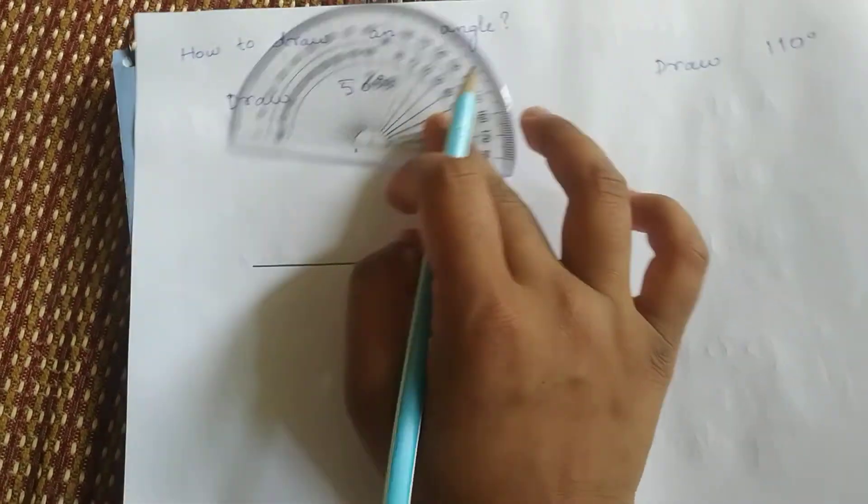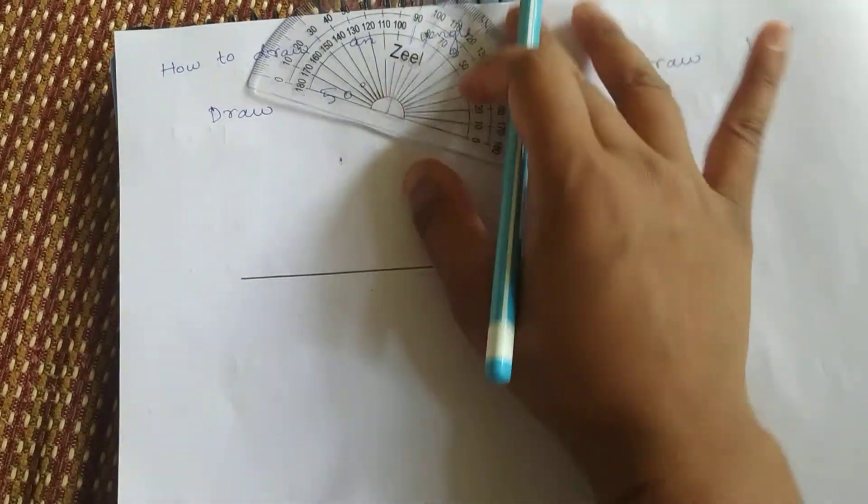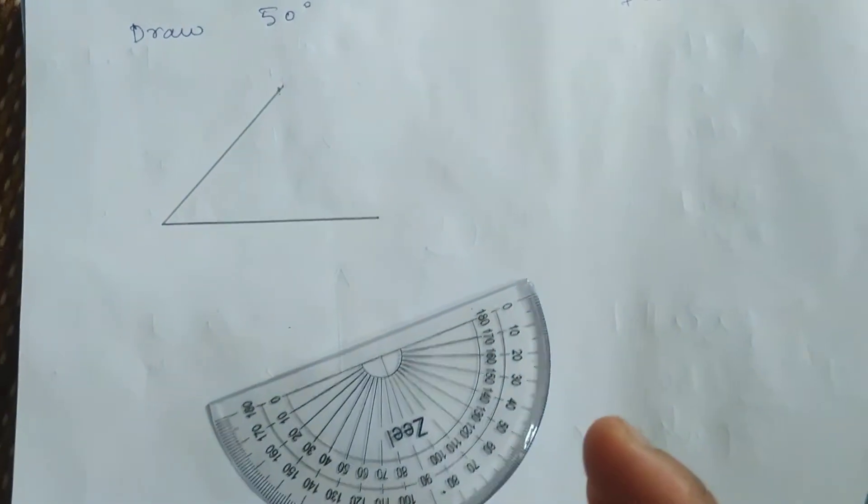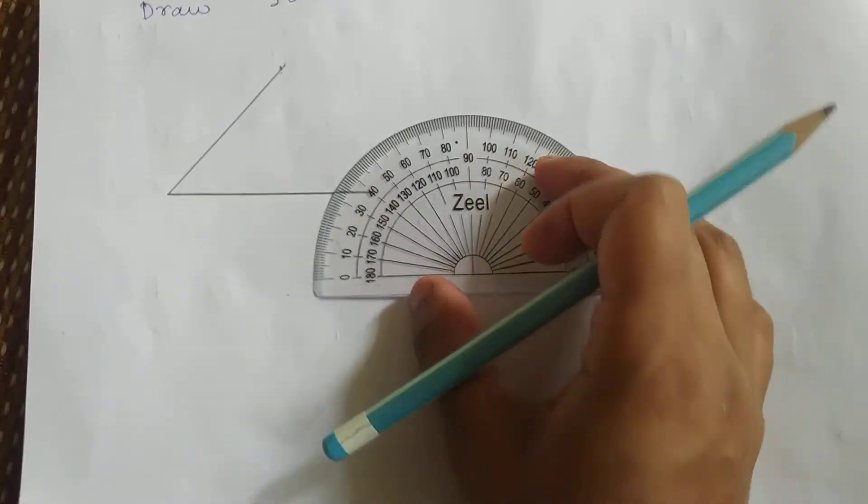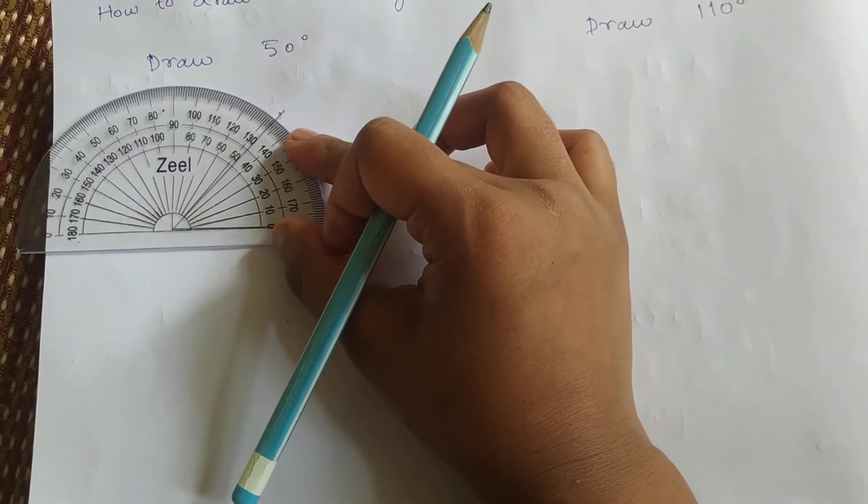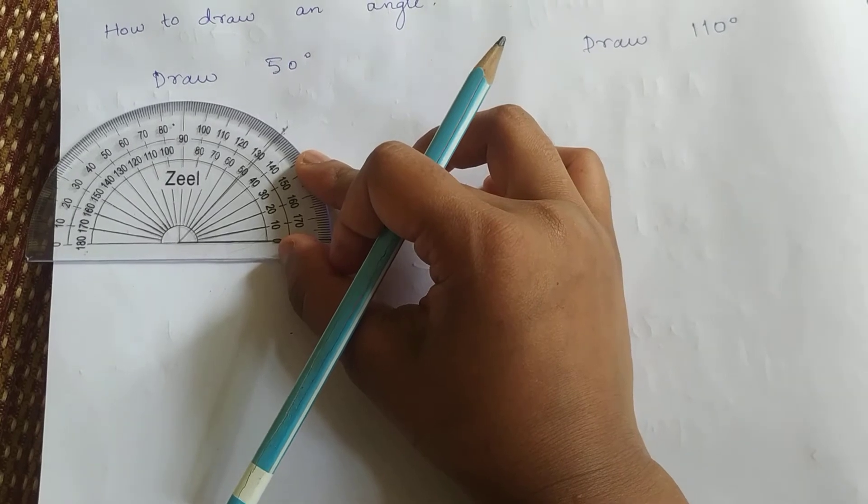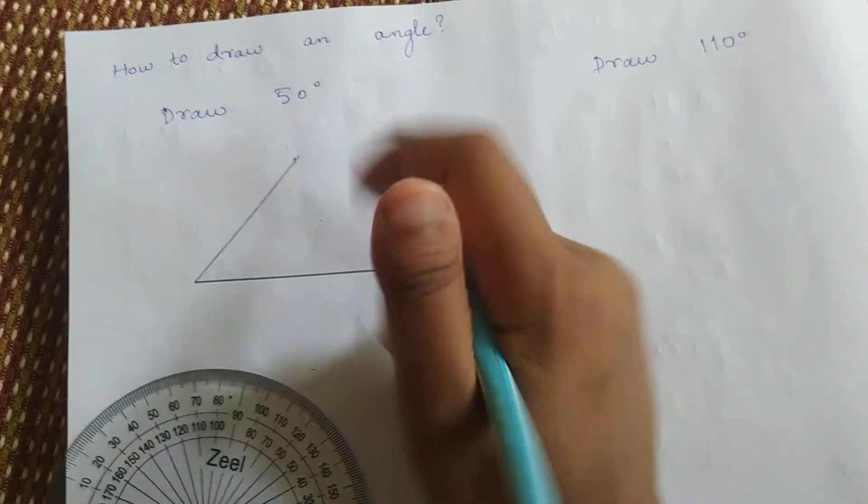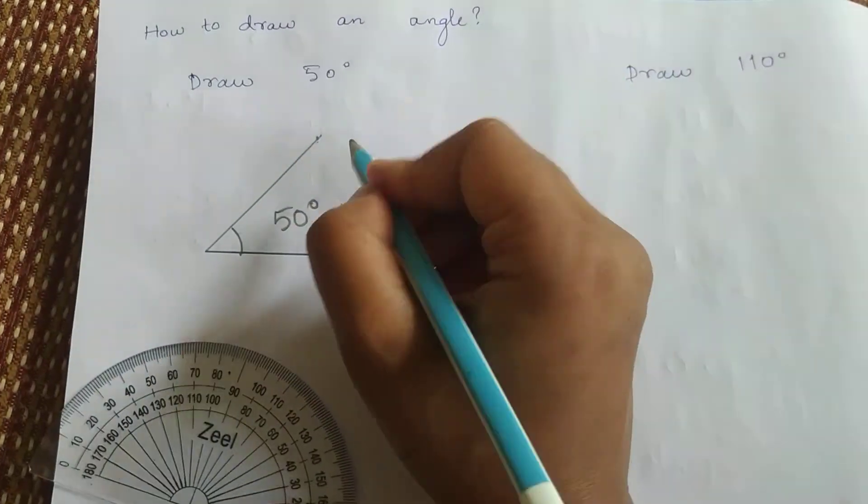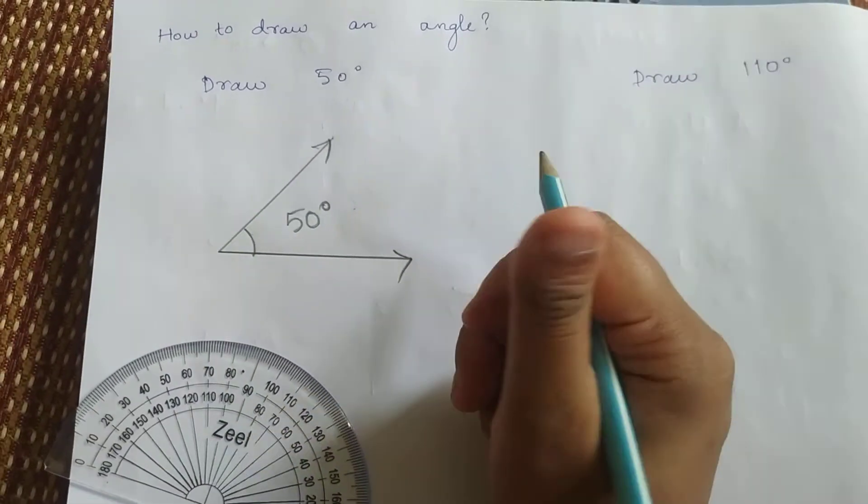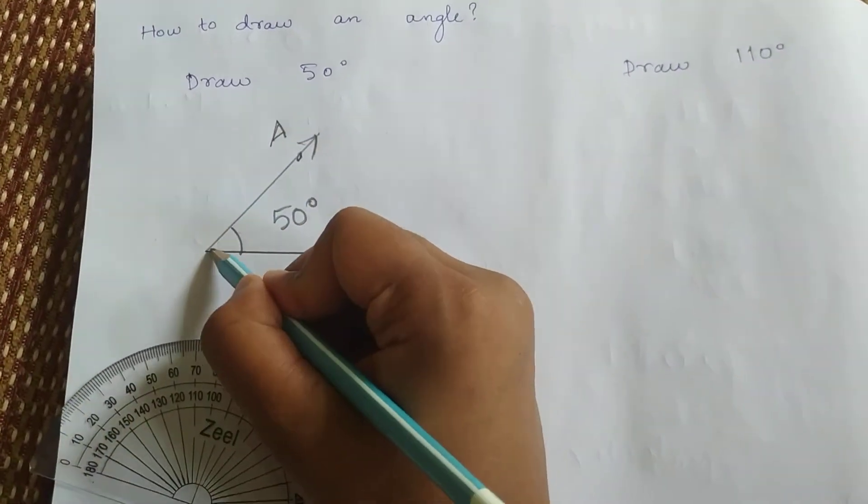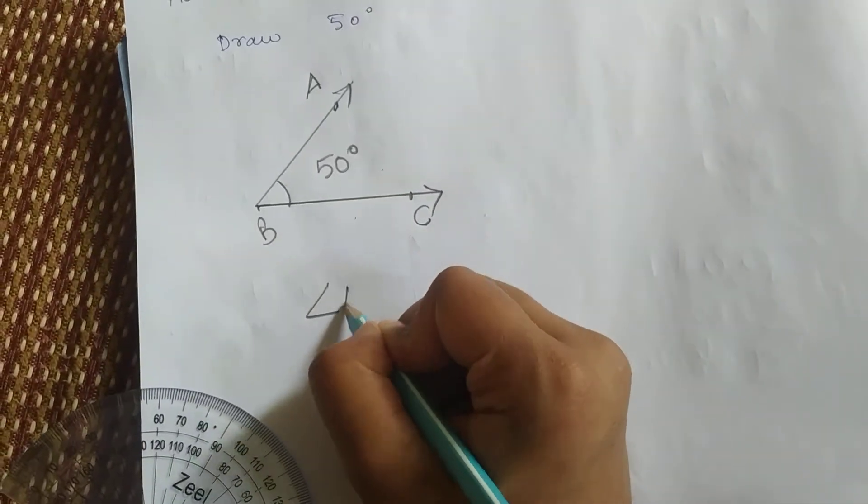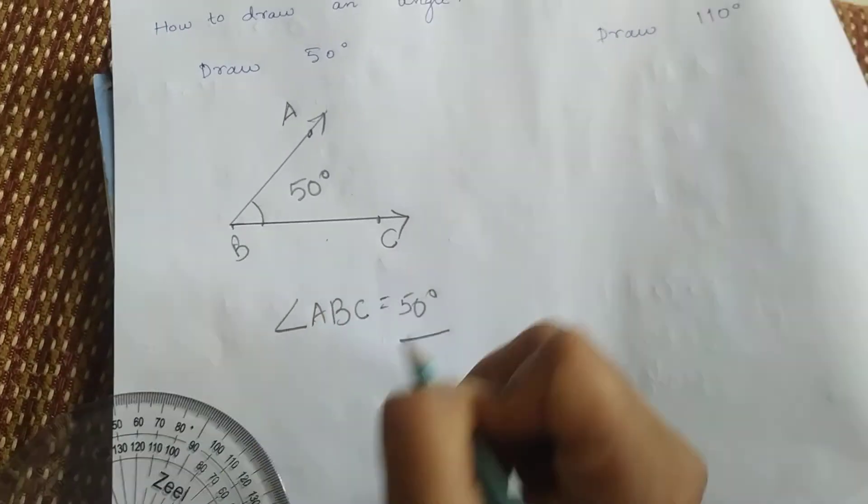Put a dot here nicely. Remember this should be exactly in the center. Now remove this and we have to join this dot and this line. We will put this here and draw a line. So the line is drawn. Now we can check this again. We will put it in this corner. And check if it is exactly fifty or not. Right? This exactly matches our fifty. So this is a fifty degree angle. We will mark it like this and give it a name: A, B, C. You can use any alphabet. Angle ABC is equal to 50 degrees. This is how we write it.